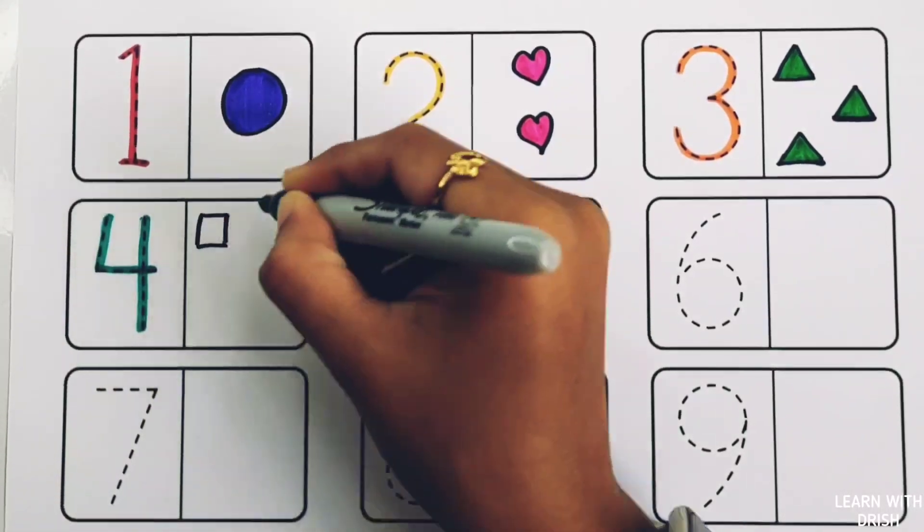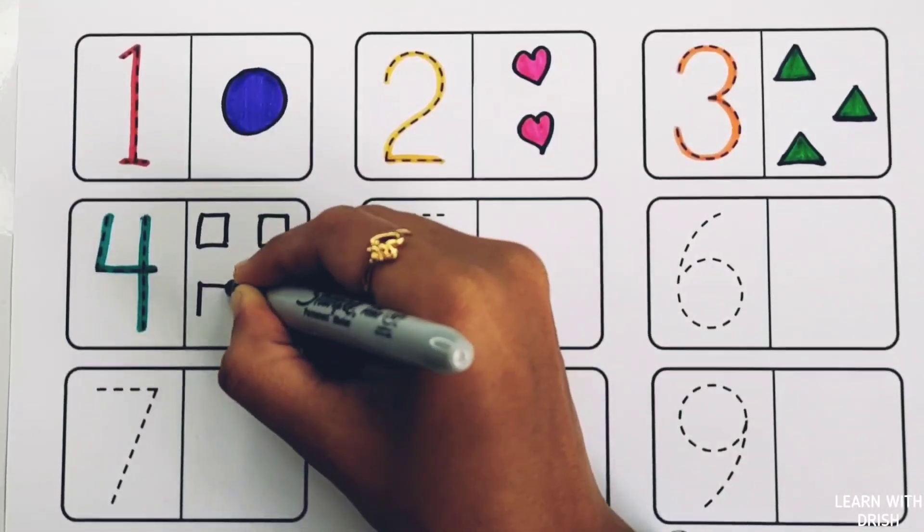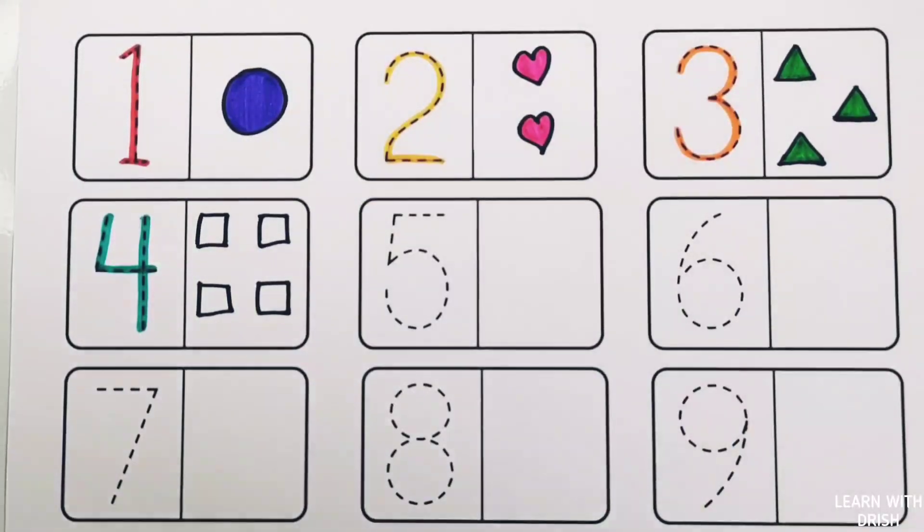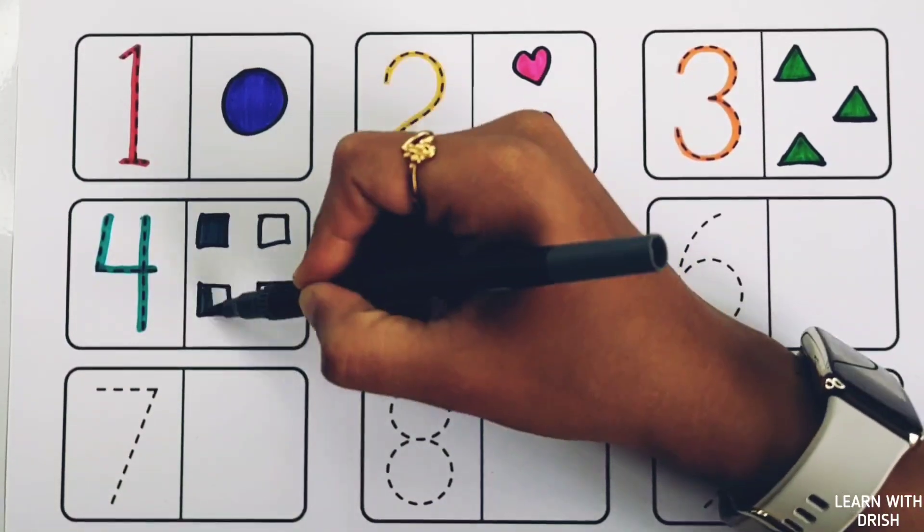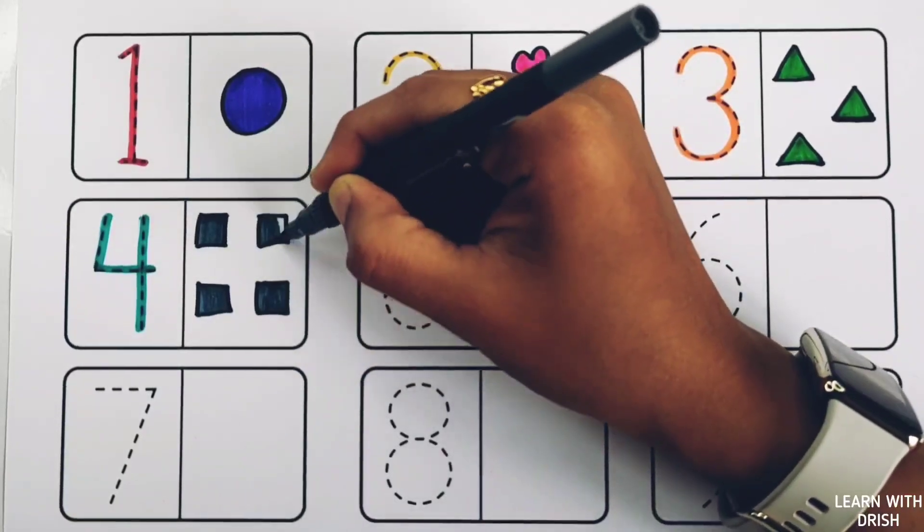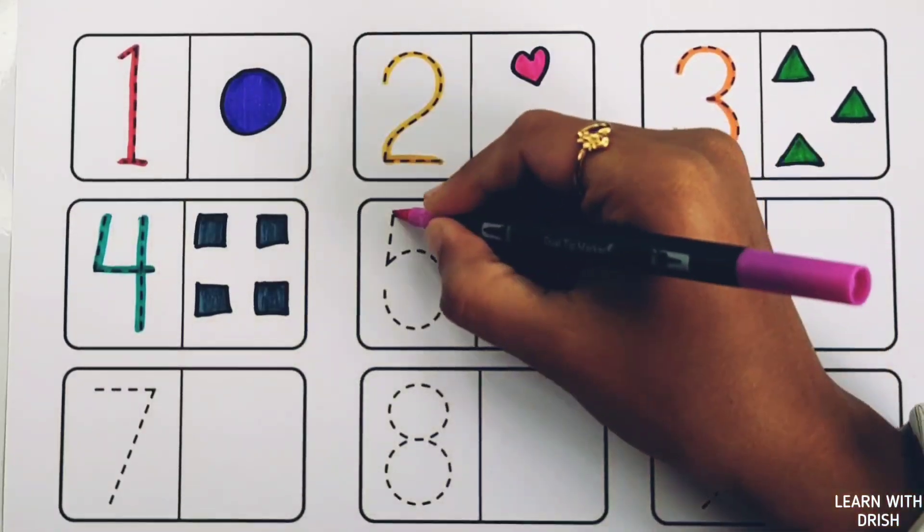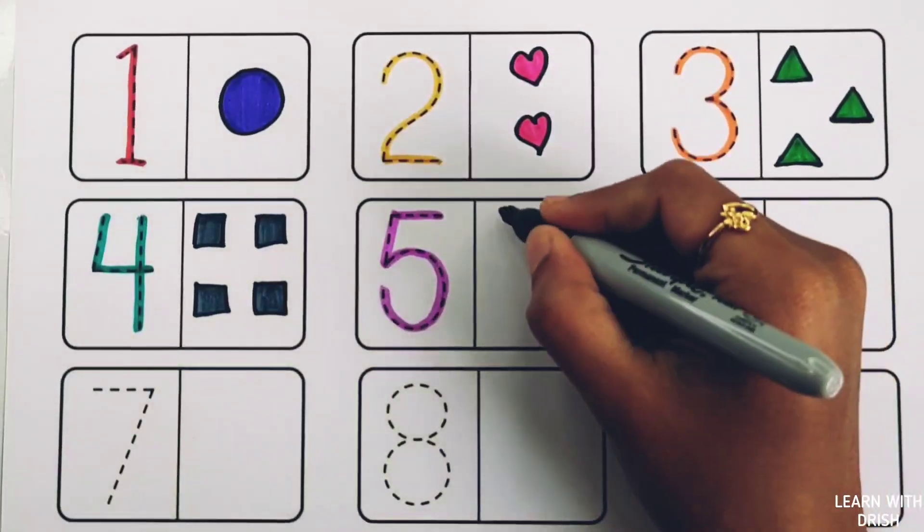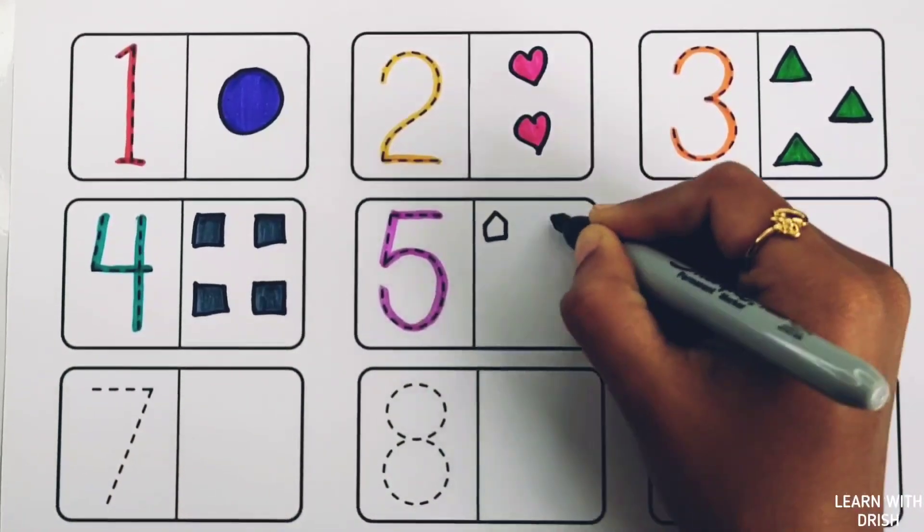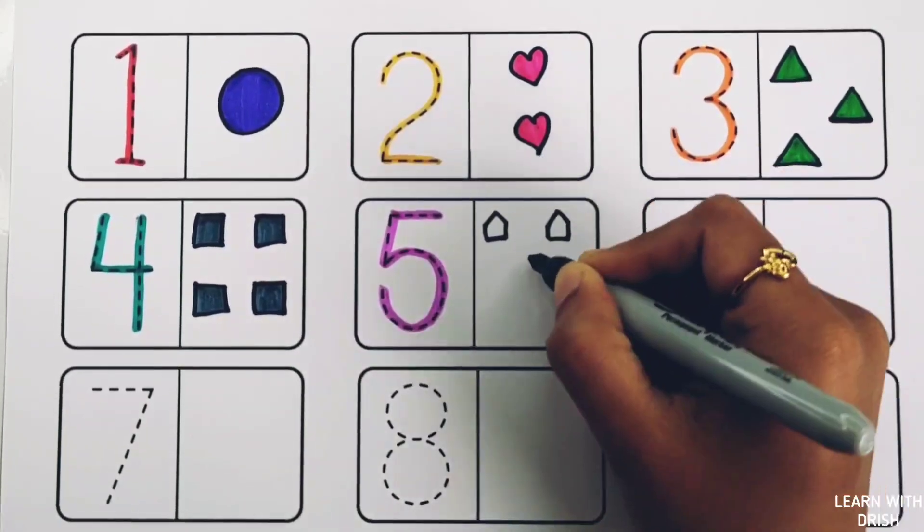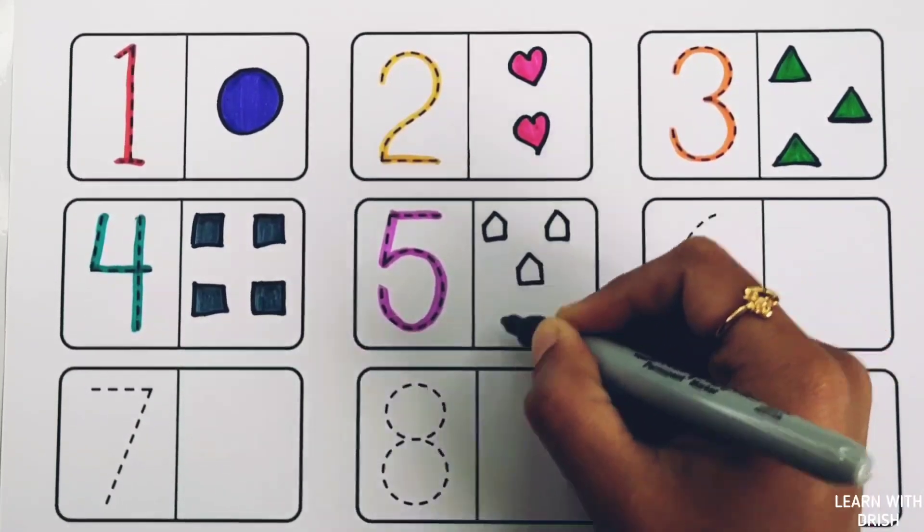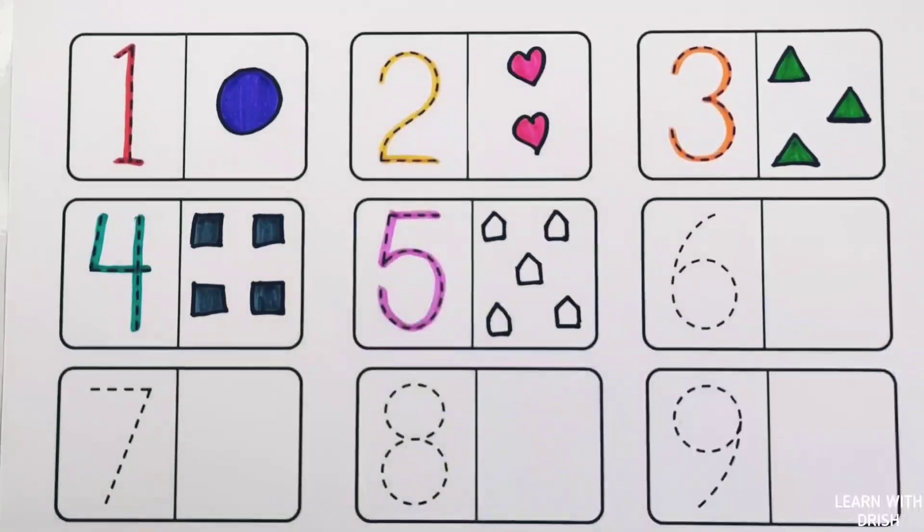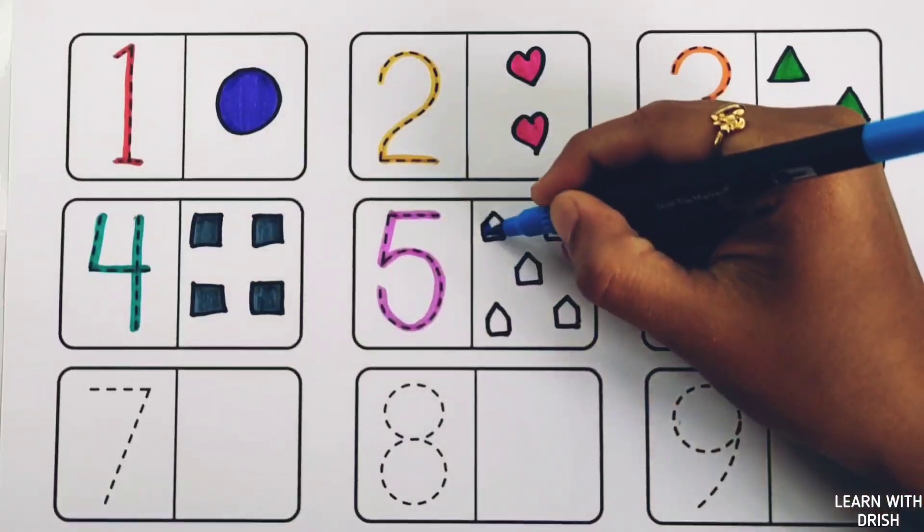One, two, three, four. Four squares, gray color. Number five. One, two, three, four, five. Five pentagons, blue color.